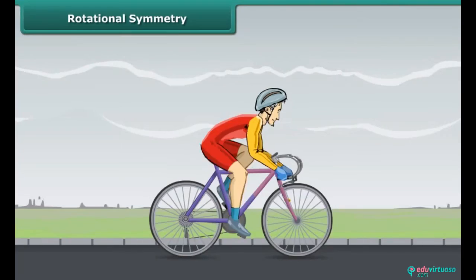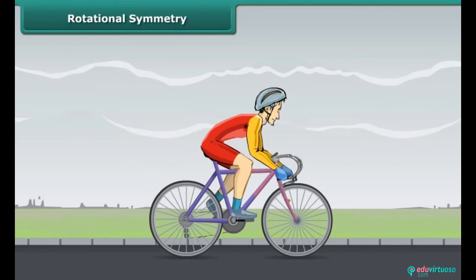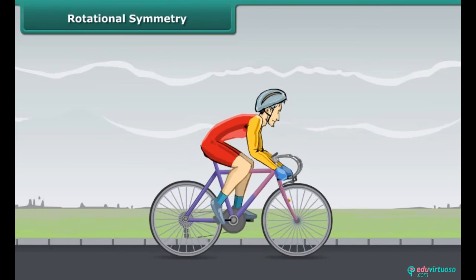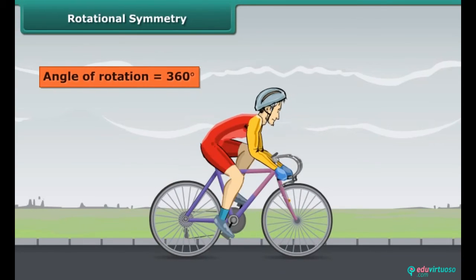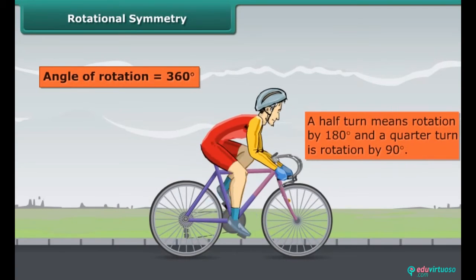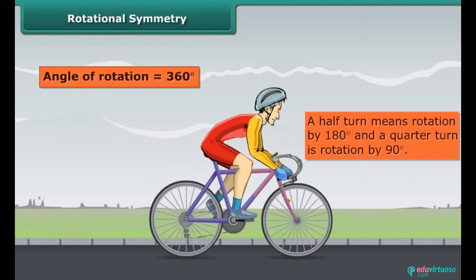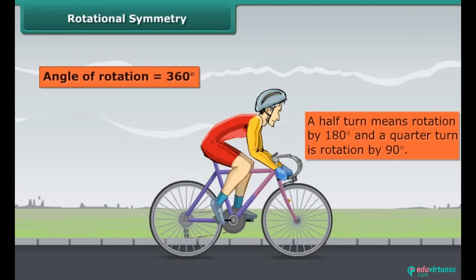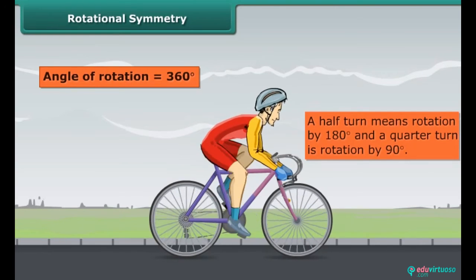The angle of turning during the rotation is called the angle of rotation. If a thing makes a full turn, its angle of rotation is 360 degrees. A half turn means rotation by 180 degrees, and a quarter turn is rotation by 90 degrees.